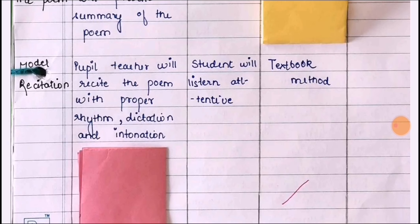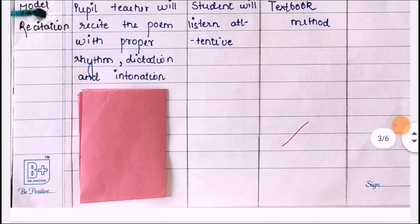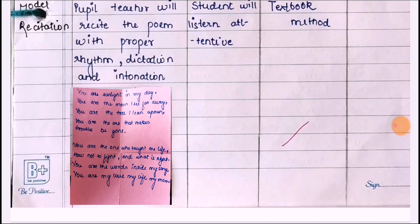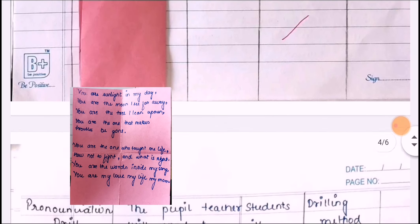The next step is model citation. The pupil teacher will recite the poem in class with proper rhythm, diction, and intonation. Students will listen attentively. The method used is the textbook method. We shall write the stanza lines on a pink color chart displayed on the page for students to study the poetry lines.